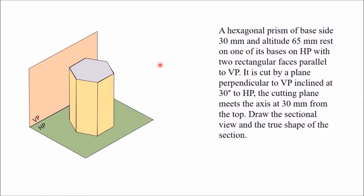Today I am going to explain a problem on projections of a section solid. In this problem, a hexagonal prism of base size 30 mm and altitude 65 mm rests on one of its bases on HP with two rectangular faces parallel to VP. This hexagonal prism is kept on one of its bases on HP with two parallel faces — one face and another face — parallel to VP.